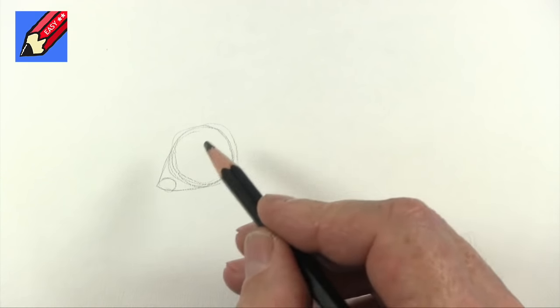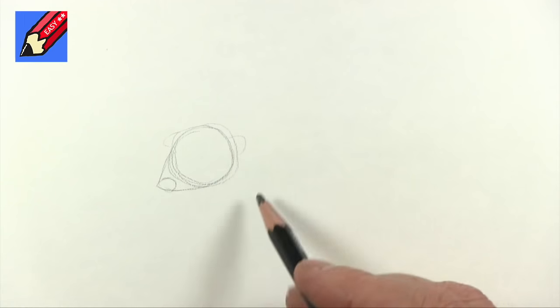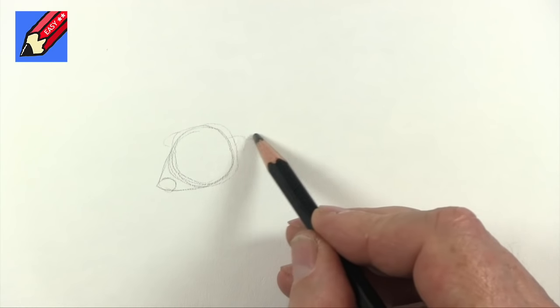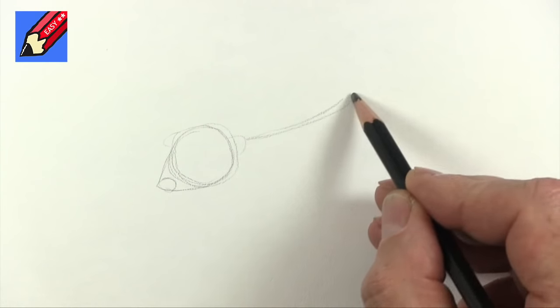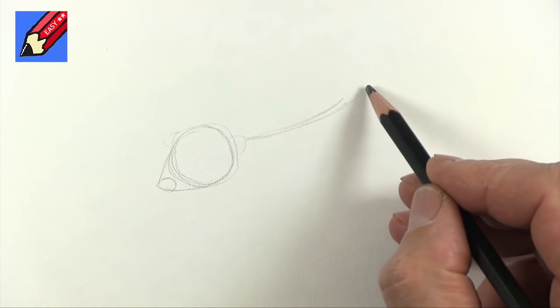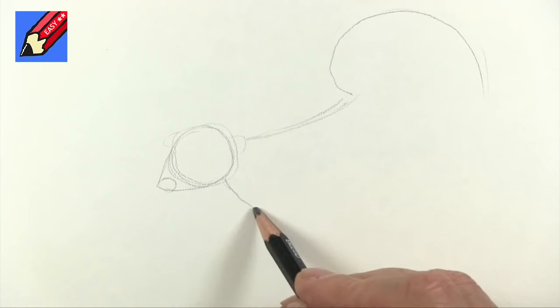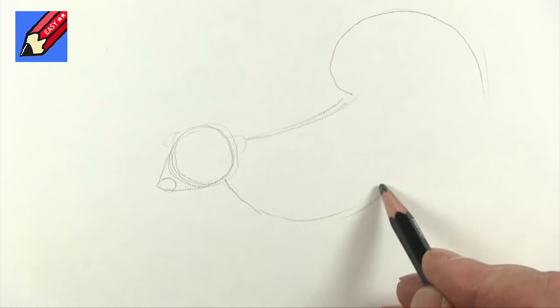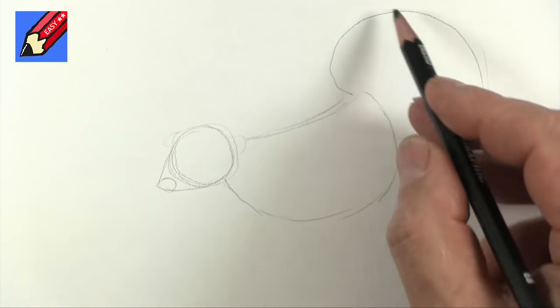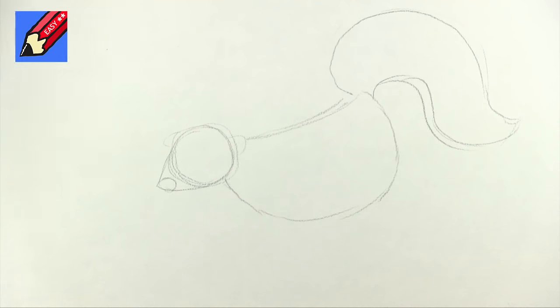And then the nose will be there. They've got quite a piggy kind of nose, ears, and then kind of from behind the ear we're going to want this curving upwards and then around into the tail and then we want this sort of coming around like that and then the tail going off there.